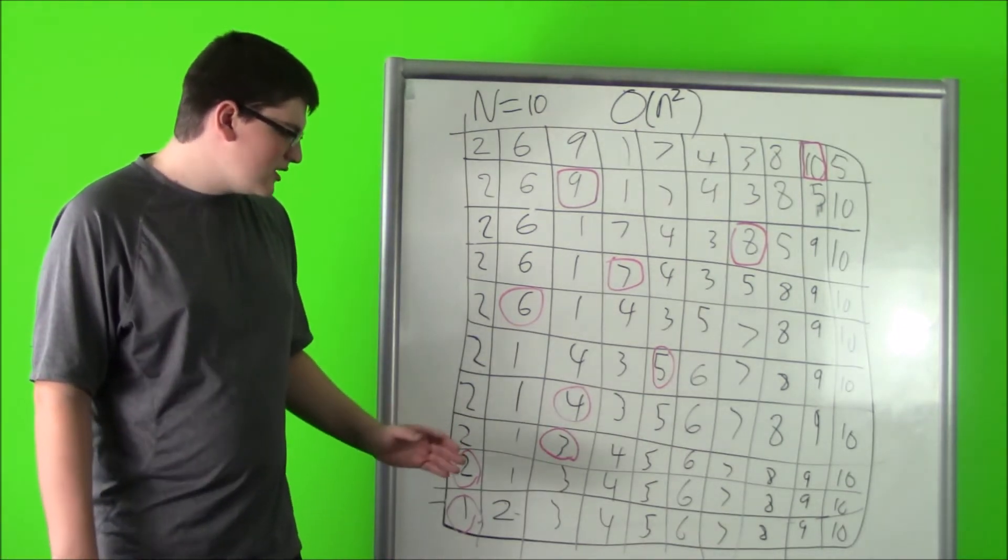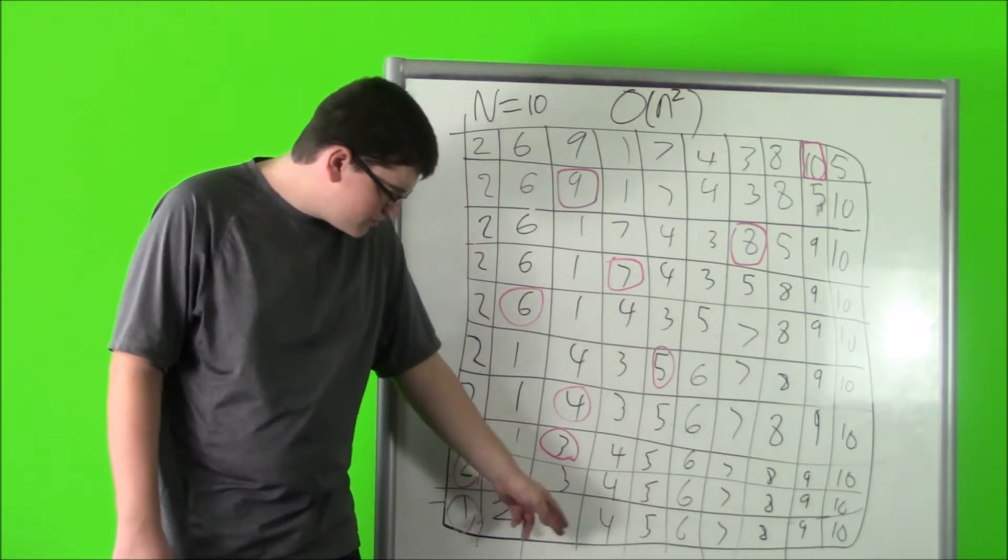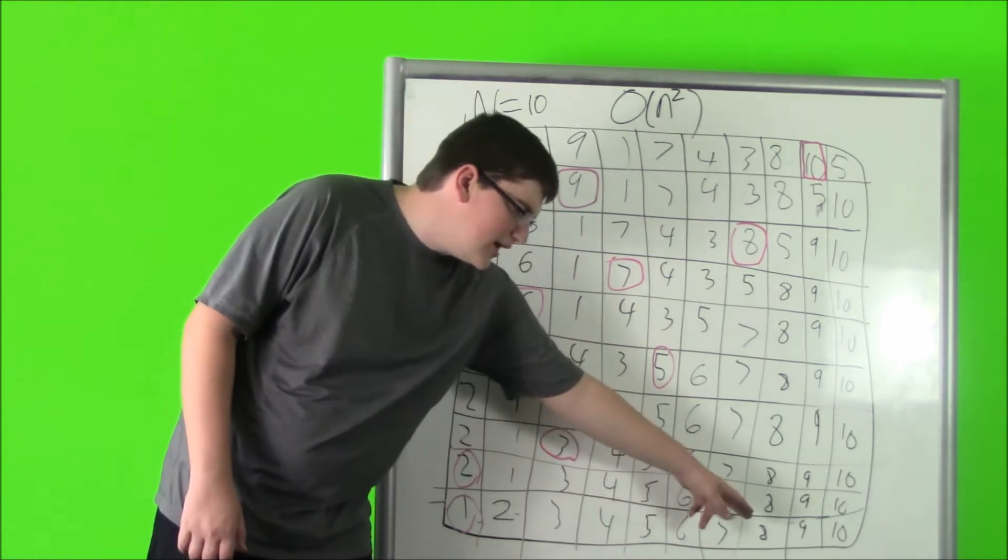After all that is done, we'll have the sorted array of 1, 2, 3, 4, 5, 6, 7, 8, 9, 10.